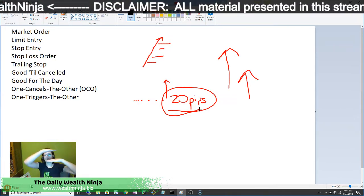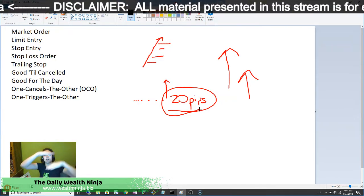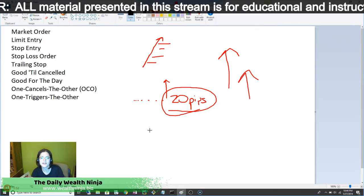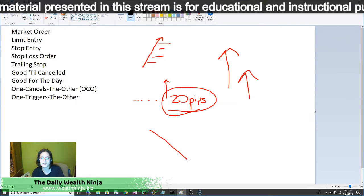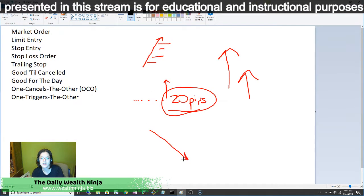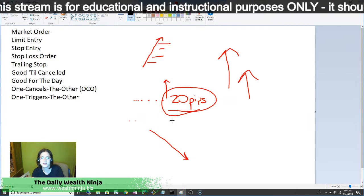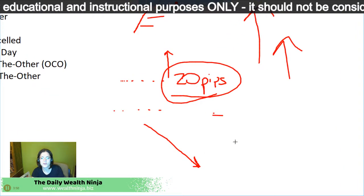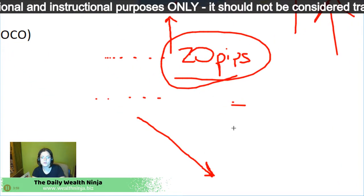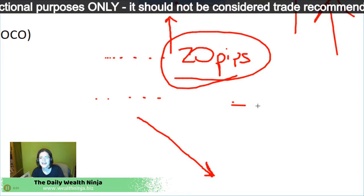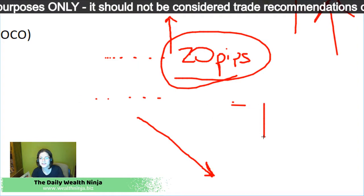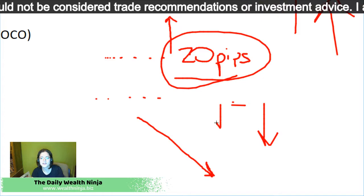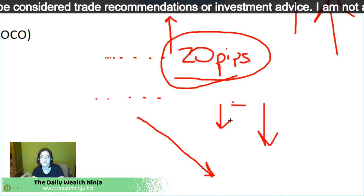Or if you're in a sell — if it's going down and you have your stop loss up above, then as your price goes down, your stop loss will also go down.